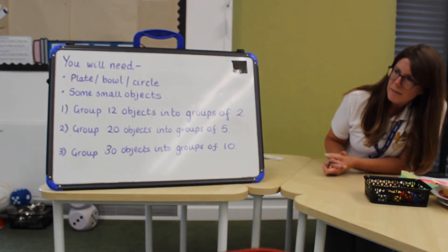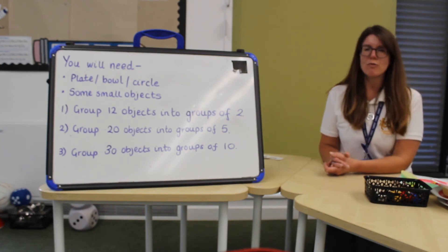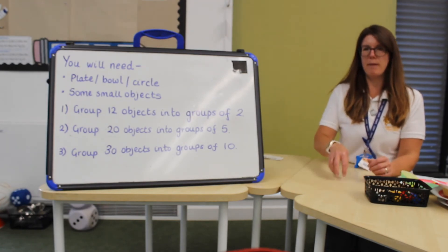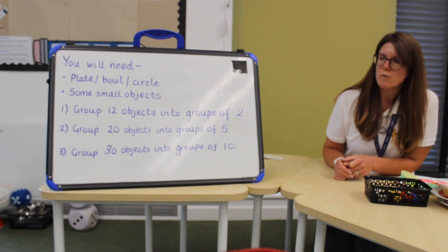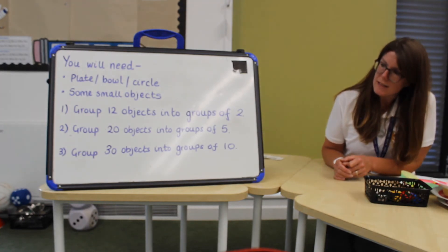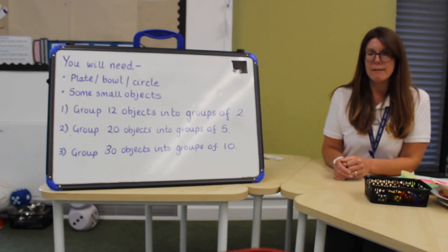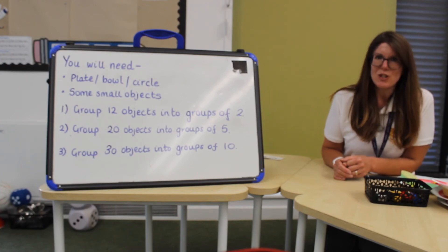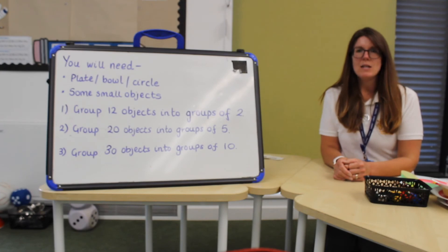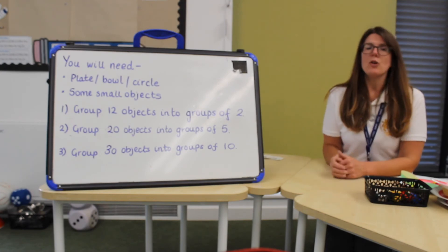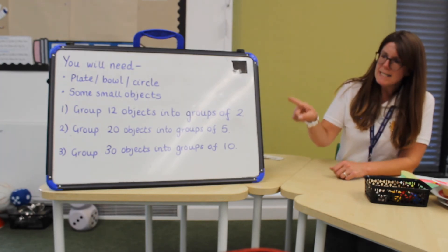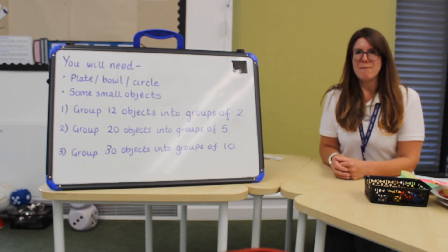And I would like you to make twelve objects into groups of two. So you are going to need twelve objects and group them as I have just done in groups of two. Then you are going to use twenty objects and put them into groups of five this time. And then you are going to do thirty objects and put them into groups of ten. So pause the video now, collect everything that you are going to need to make your groups. And once you have made these groups, come back and join me to find the answer.